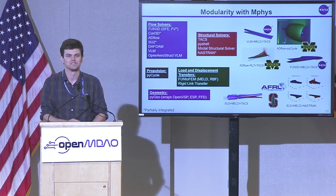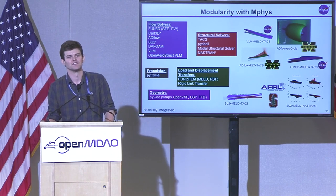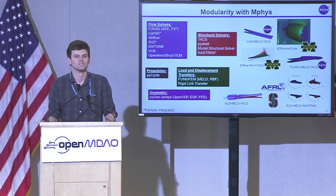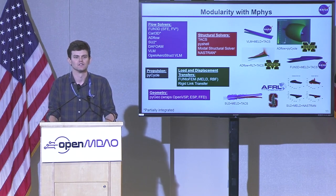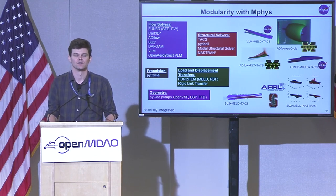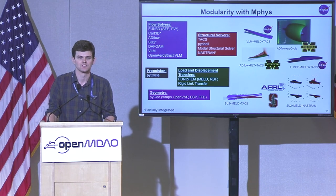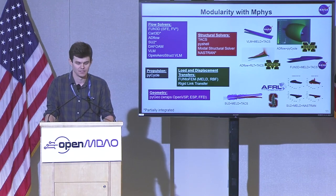With this modularity, we can attach a bunch of different codes into the same framework. On the top left there are five or so CFD solvers, a couple of vortex lattice codes, some structural solvers. Through PyGeo, we can connect to OpenVSP or Engineering Sketch Pad. On the right side you can see some applications from the QUAD project that Matt was talking about yesterday — the aerostructural side — and some from Brett and me at NASA, and from Michigan as well.